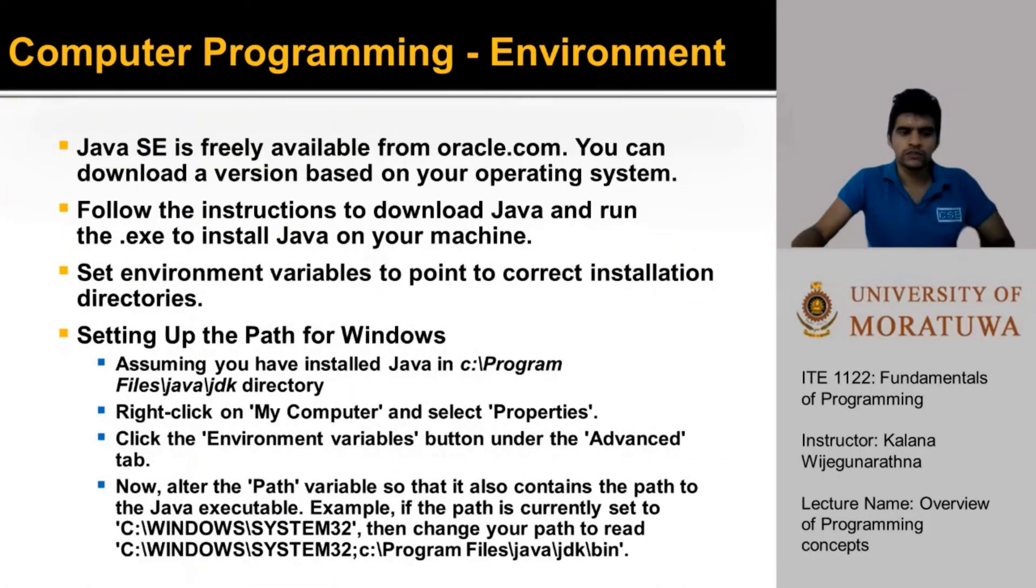In this course, we will be using Java to learn the fundamentals of programming. Even though we will be using Java, we will be learning a lot of concepts that are applicable to many programming languages. Java SE can be downloaded freely from oracle.com. The link is provided on the Moodle course page, or you can simply search for Download Java on Google. You can then go to the Oracle site and download a version based on your operating system. Then follow the instructions to download Java and run the .exe file to install Java on your machine.